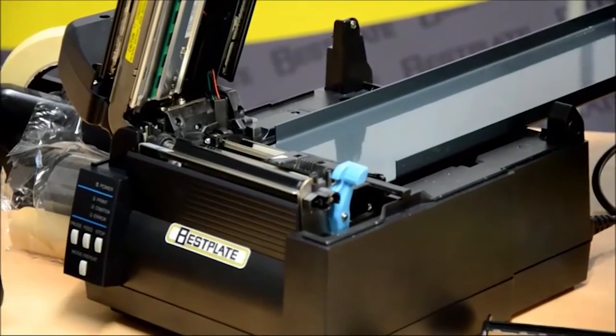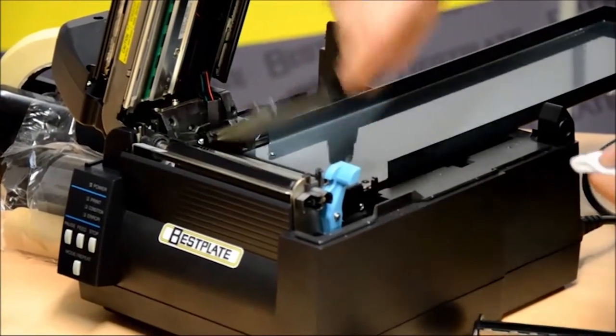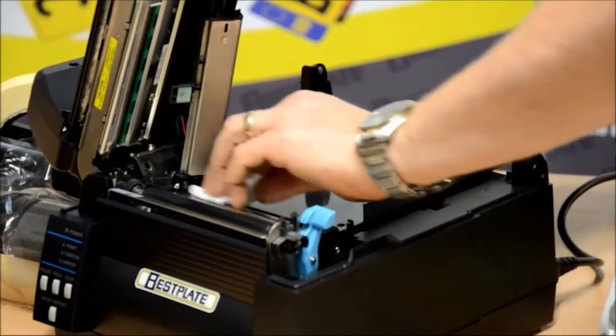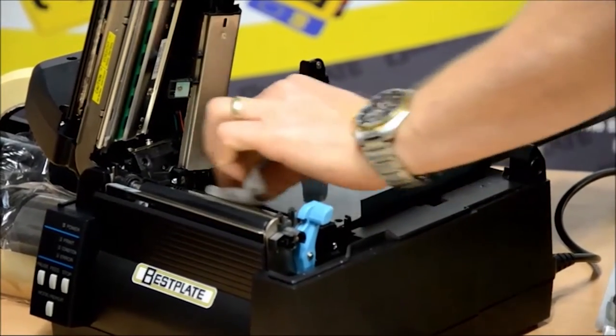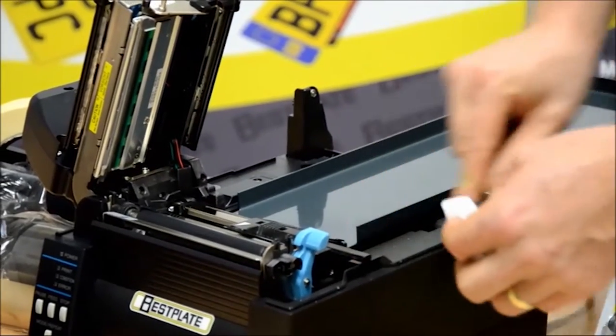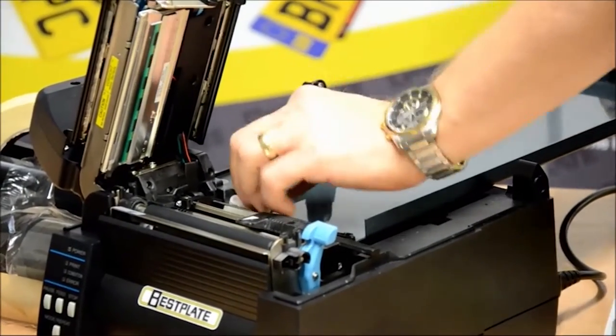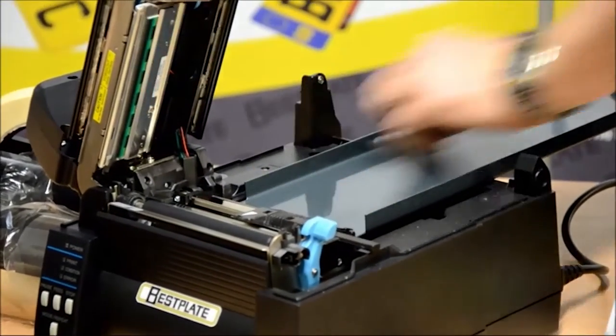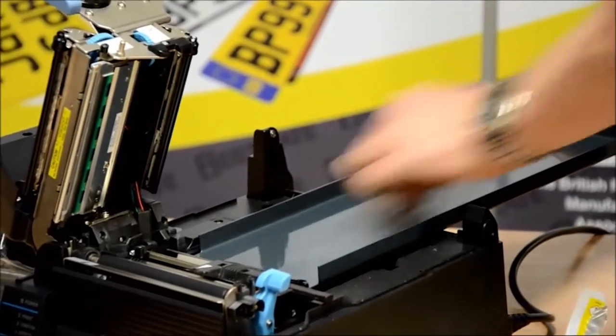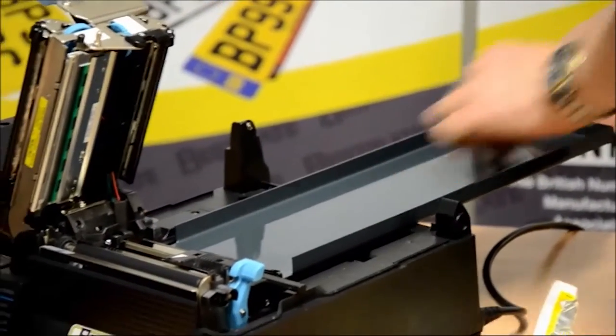Next area to clean is the sensor arm, underneath the bottom of the sensor arm and the base that it sits on. Last thing to clean is the tray, making sure you get into all the corners so that there's no chance of any dust re-entering the printer.